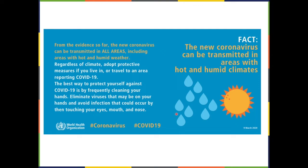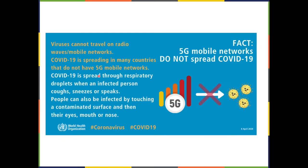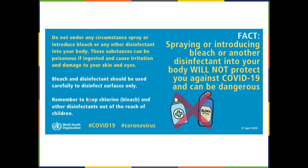Can the coronavirus be transmitted in hot and humid climates? Yes — it's not limited to cold climates. Would exposing yourself to sun or high temperatures prevent COVID-19? No. Does 5G spread COVID-19? No — there are places with no 5G where coronavirus is still spreading, which disproves that claim. Would consuming or spraying yourself with bleach or disinfectants protect you from COVID-19? It may kill the virus, but it will also kill you — do not use disinfectants on or in your body.